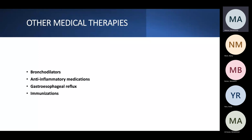Other medical therapy: bronchodilators should not be used empirically — only if PFT shows reversibility in patients with coexistent COPD or asthma. Anti-inflammatory medications, including statins and prolonged steroids, have been studied; steroids may help with acute exacerbation but not as chronic treatment. GERD treatment has been used but hasn't shown significant effect on exacerbation rates. Immunization is important — influenza, pneumococcal, and COVID-19 vaccines are recommended for all patients with lung disease.